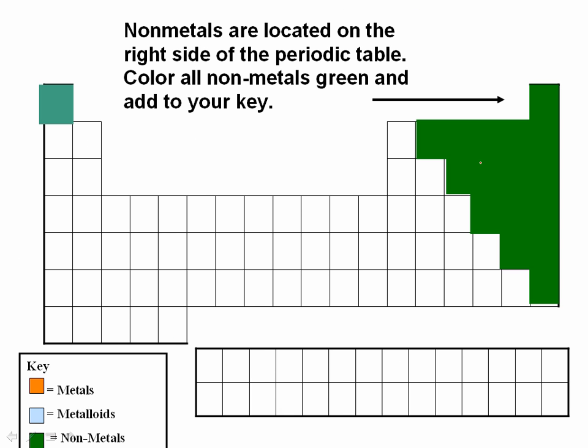All right, so this section of the periodic table in green, you can see, are your non-metals all to the right-hand side. The only one that's special is your hydrogen over here on the left.